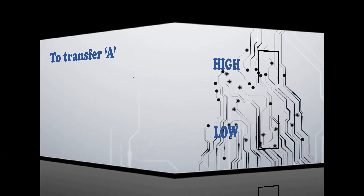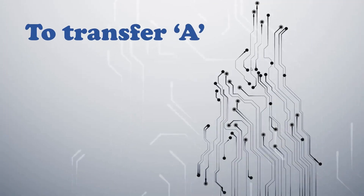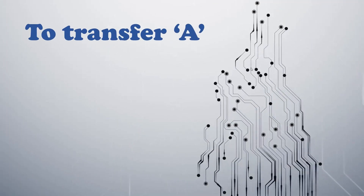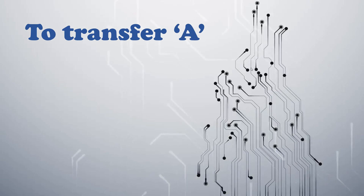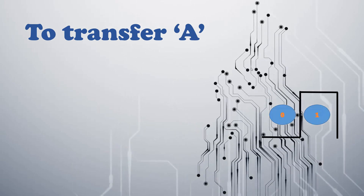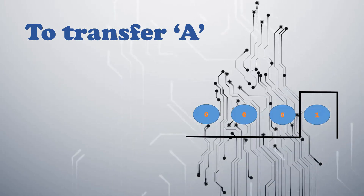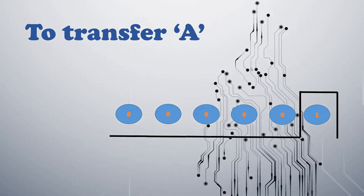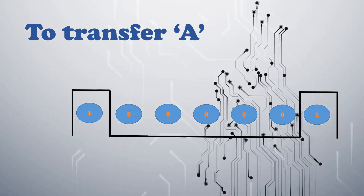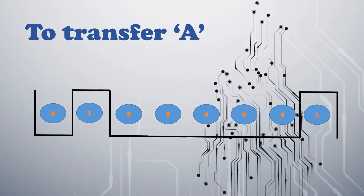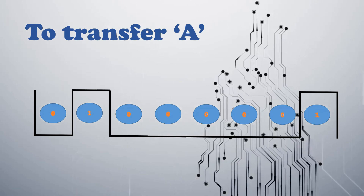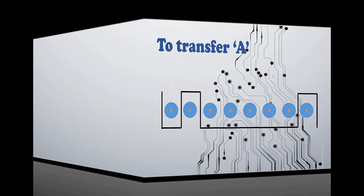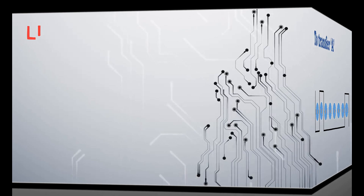So to transfer character A, the line is toggled as 1, 0, 0, 0, 0, 0, 1, 0 — representing the binary value of character A — as shown here. This way the data is transferred from one MCU to the other.